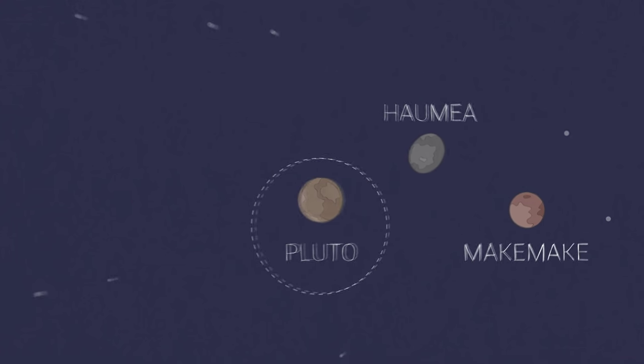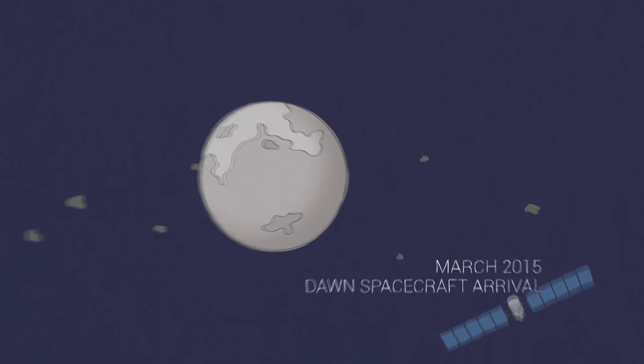Pluto is the most famous, but closer to home is another mysterious world: Ceres, the first dwarf planet to be visited by a spacecraft.